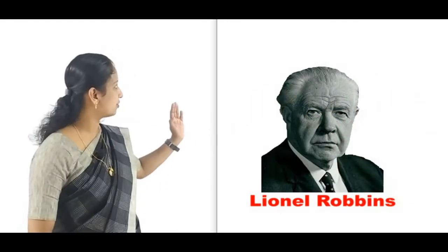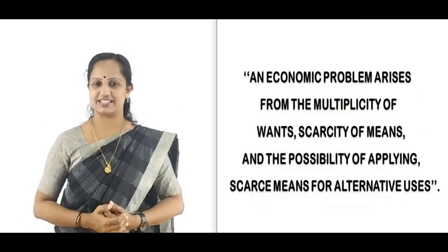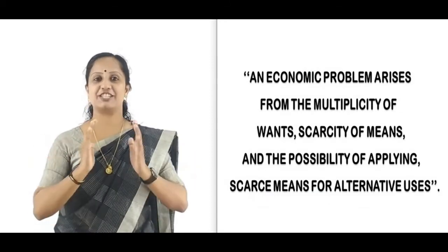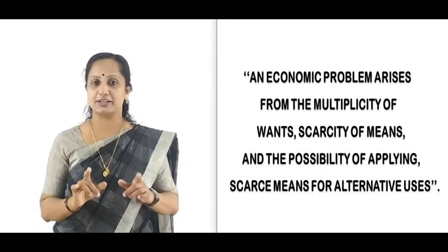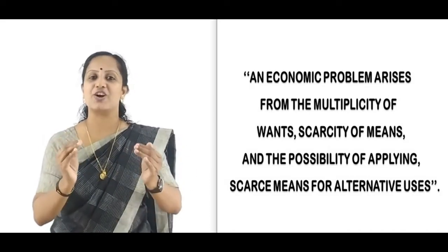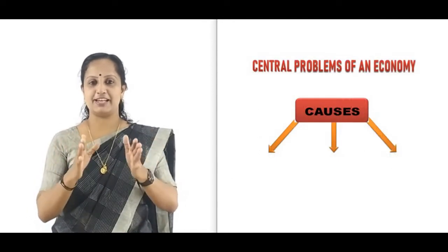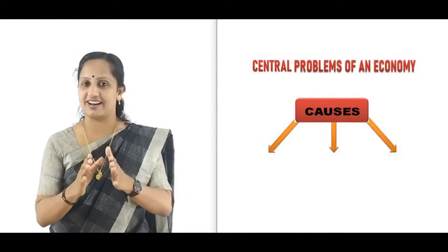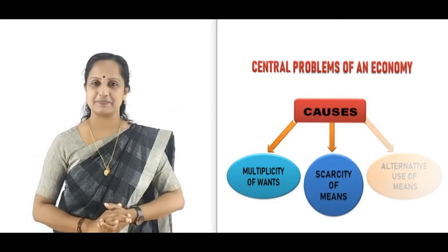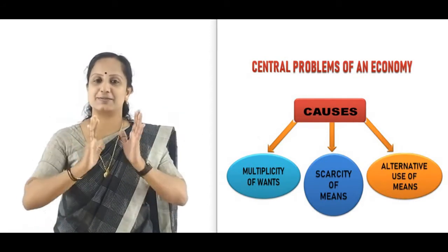According to Professor Lionel Robbins, an economic problem arises from the multiplicity of wants, scarcity of means, and the possibility of applying scarce means for alternative uses. Thus, the three main causes of central problems are: multiplicity of wants, scarcity of means, and the alternative use of scarce means.